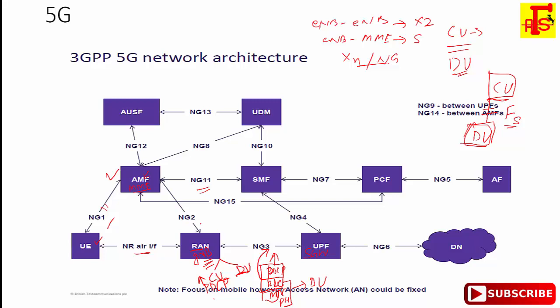The SMF is the Session Management Function. It replaces the Serving Gateway control plane and PDN Gateway control plane from LTE. In LTE, control and user plane data were combined, but in 5G the control and user plane are separated. SMF handles functions that were handled by 4G MME, Serving Gateway control, and PDN Gateway control. It allocates IP addresses to the UE, handles NAS signaling for session management, and sends QoS and policy information to the RAN via the AMF.